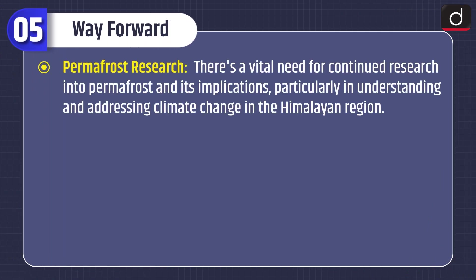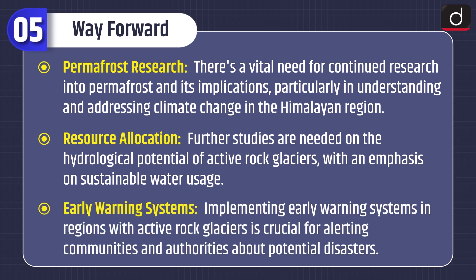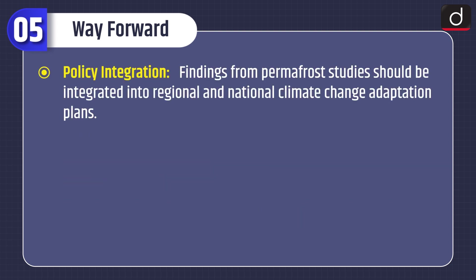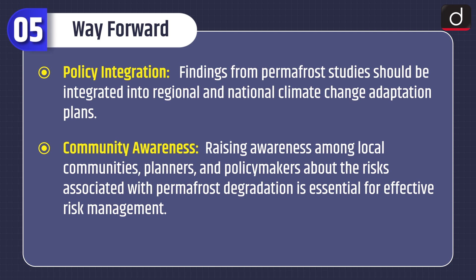Moving on to way forward: Permafrost Research — there is a vital need for continued research into permafrost and its implications, particularly in understanding and addressing climate change in the Himalayan region. Resource Allocation — further studies are needed on the hydrological potential of active rock glaciers with an emphasis on sustainable water usage. Early Warning Systems — implementing early warning systems in regions with active rock glaciers is crucial for alerting communities and authorities about potential disasters. Policy Integration — findings from permafrost studies should be integrated into regional and national climate change adaptation plans. Community Awareness — raising awareness among local communities, planners, and policy makers about the risks associated with permafrost degradation is essential for effective risk management.